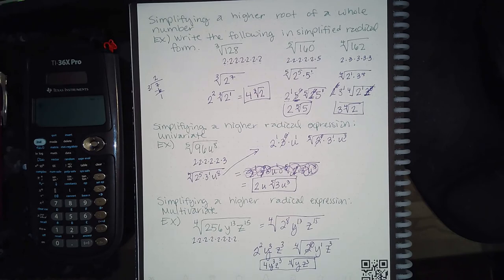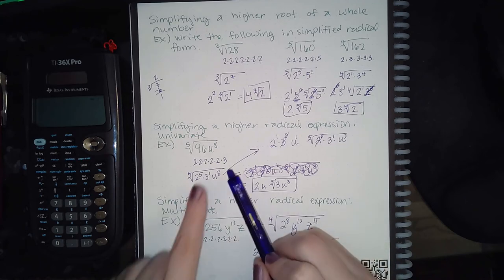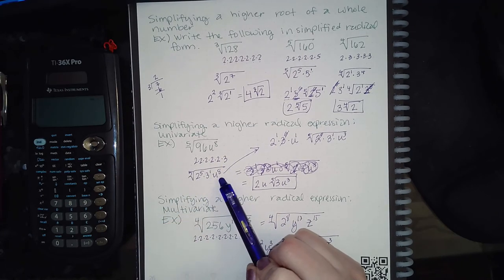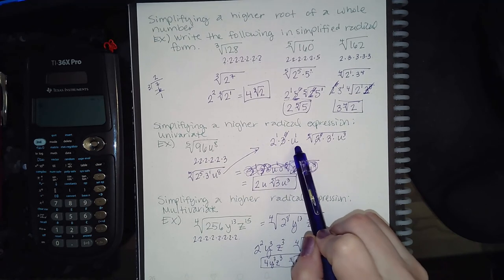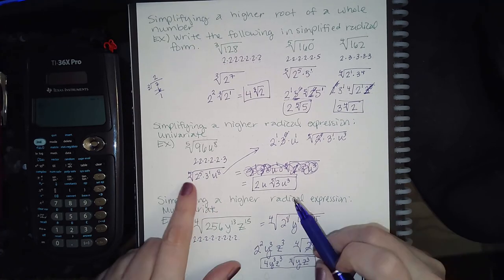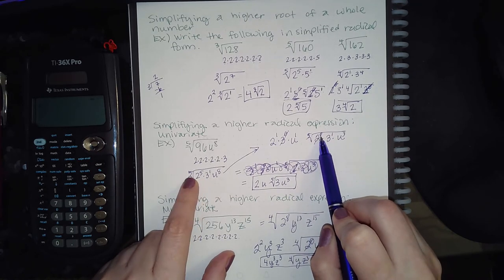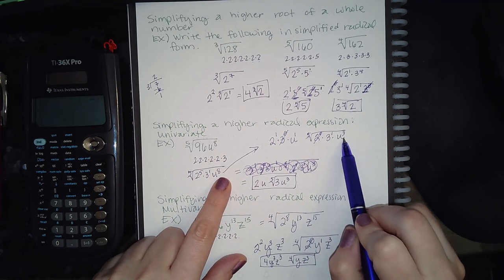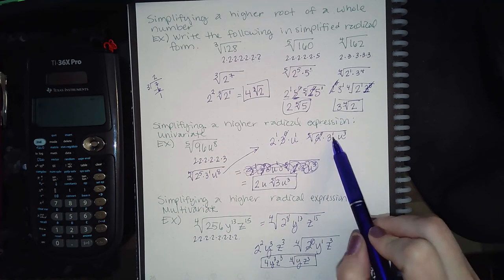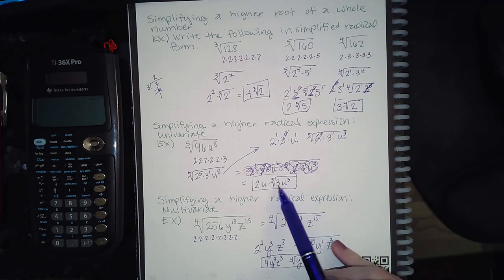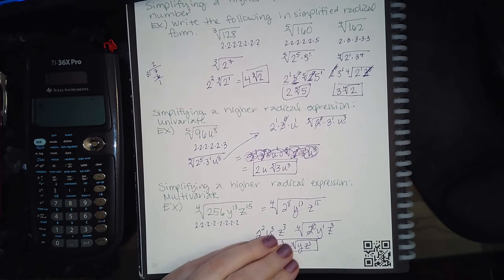For an example with variables at a higher root, I use the prime factorization route. I found the factorization is 2⁵ · 3¹, and I have three bases because of the variable u. I wrote 2, 3, and u on the outside and 2, 3, and u on the inside, then applied the division method. Five goes into 5 once with zero left over; 5 goes into 1 zero times with 1 left over; 5 goes into 8 once with 3 left over. So on the outside I have 2 and u, and inside the fifth root I have 3 and u³.